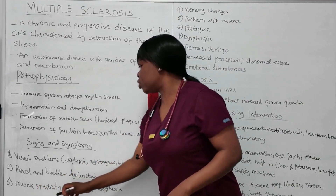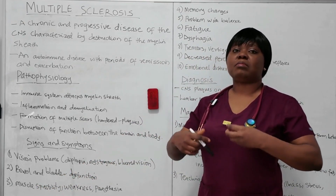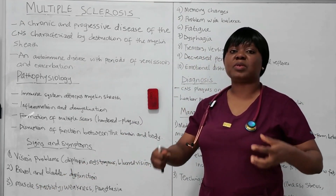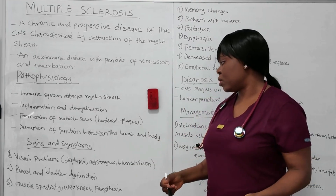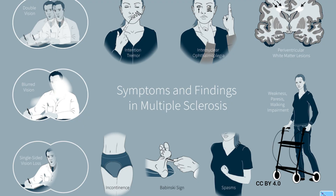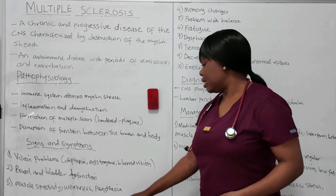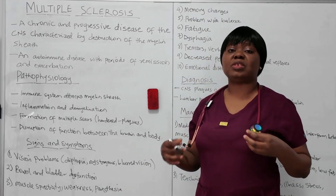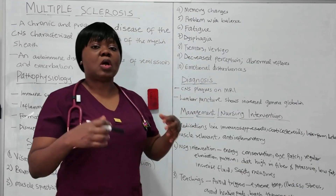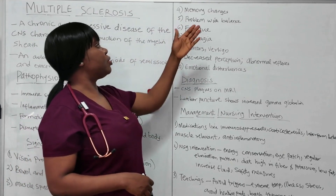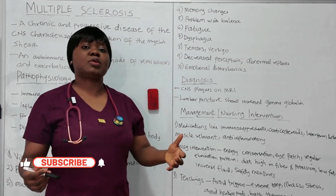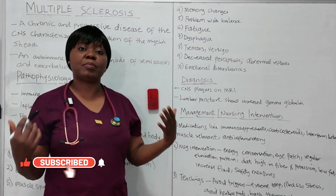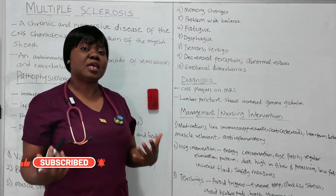Patients will also experience muscle spasticity — at times the muscles become rigid and hardened, and they will experience muscle spasms. At times the muscles will also be weak, especially in the lower extremities. They will experience paresthesia, which is a tingling sensation. Other symptoms include memory changes — at times they could have problems concentrating, difficulty comprehending, and they can forget things easily.